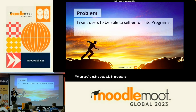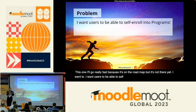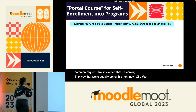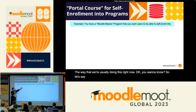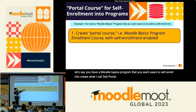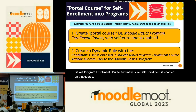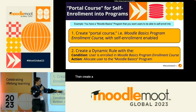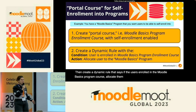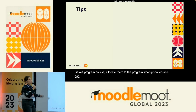This one I'll go through fast because it's on the roadmap but not there yet: I want users to be able to self-enroll into programs. That is such a common request. The way we're usually doing this right now — let's say you have a Moodle basics program. Create what I call the portal course: a course called 'Moodle Basics Program Enrollment Course' with self-enrollment enabled. Then create a dynamic rule that says if the user is enrolled in that course, allocate them to the program. I have this in the document with even more steps.